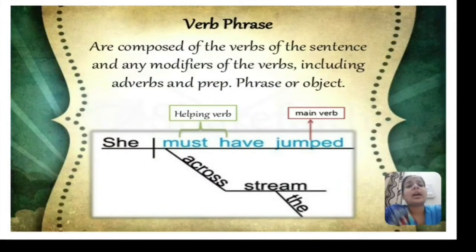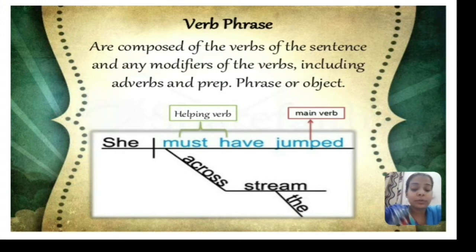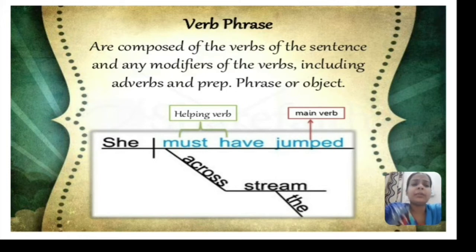Verb phrases are composed of verbs of a sentence and any modifier of the verb, including adverbs and prepositional phrases or objects. A verb phrase consists of a verb and all its modifiers, meaning auxiliary verb and main verb together are called a verb phrase.